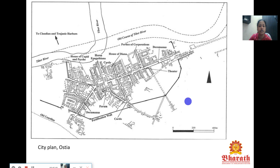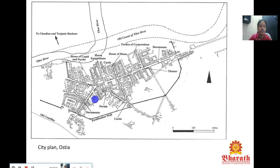The city of Ostia is a parallel-age neighborhood of Rome, located on the coastal line of the Mediterranean Sea where the Tiber River meets the sea. You have identifiable locations: the Portico of the Corporations, commerce areas, the theater, palatial areas, and the forum where temple complexes are located.